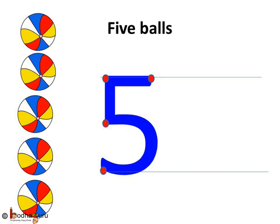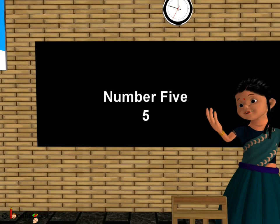Let us write 5 again. First, sleeping line, then a standing line and a backward curve. Bye-bye, kids.